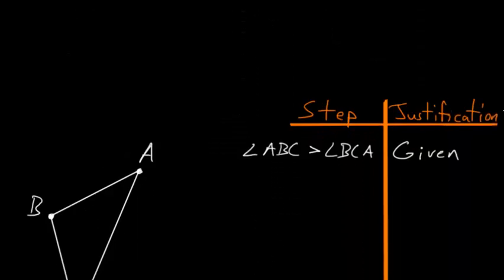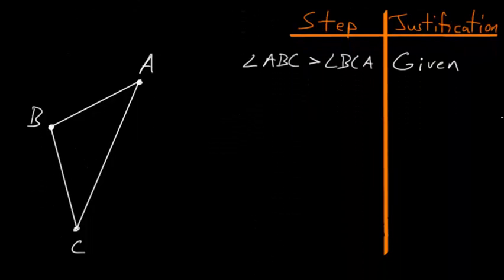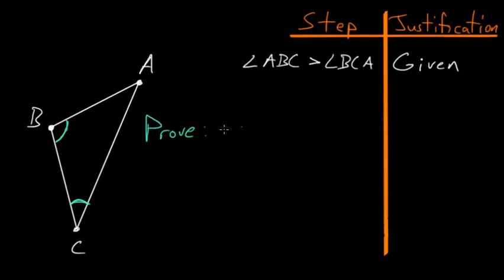So if we start with some triangle ABC, and we know that this angle ABC is bigger than the angle ACB, then what we're trying to prove here is that the side AC is bigger than the side AB.